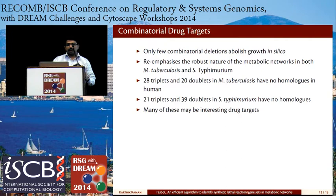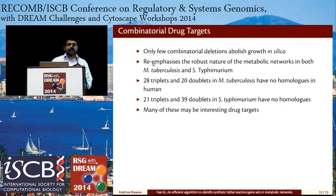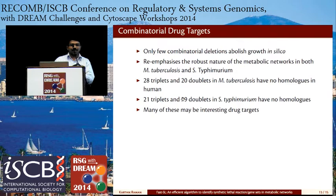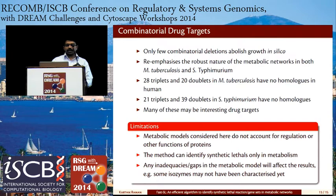We also studied combinatorial drug targets in the two pathogenic organisms Mycobacterium tuberculosis and Salmonella. Even though there are 170 million simulations to consider, only a few give rise to lethal deletions, re-emphasizing the robust nature of metabolic networks. About 28 triplets and 20 doublets in M. tuberculosis have no homologues in human, and similarly 21 triplets and 39 doublets in Salmonella — some of these may be interesting drug targets.